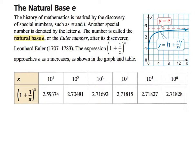That is called natural base e, also called the Euler number, after its discoverer Leonhard Euler. Now this is the expression: (1 + 1/x)^x. And here's what it looks like. Basically what it says is this: the expression approaches e.